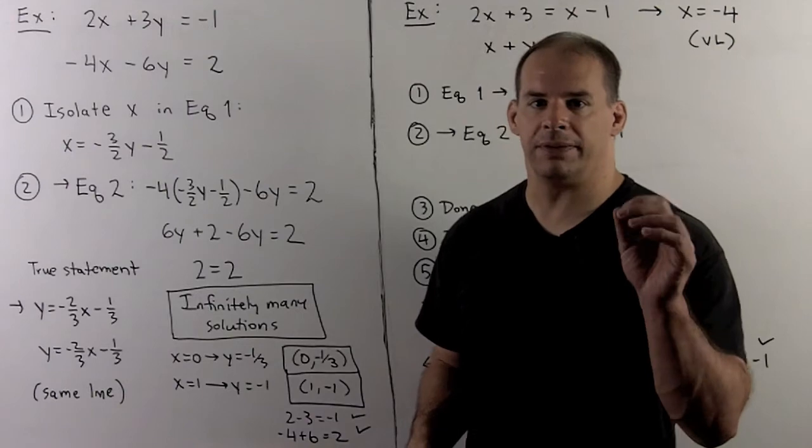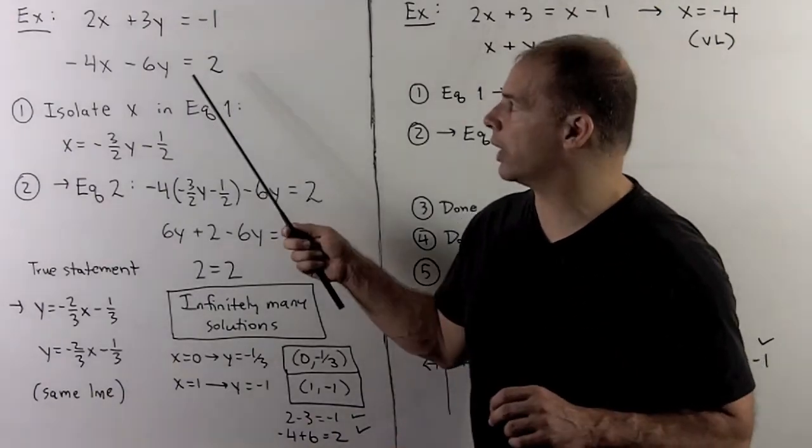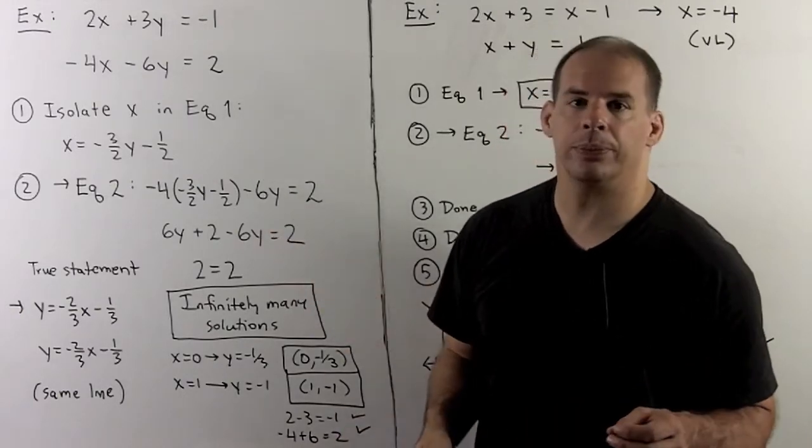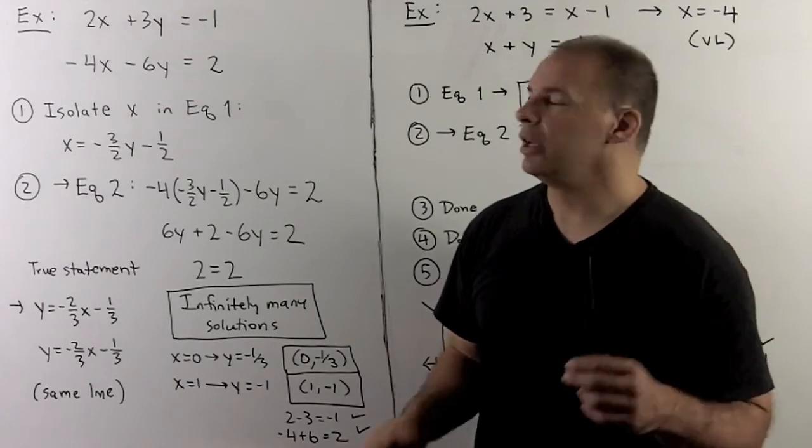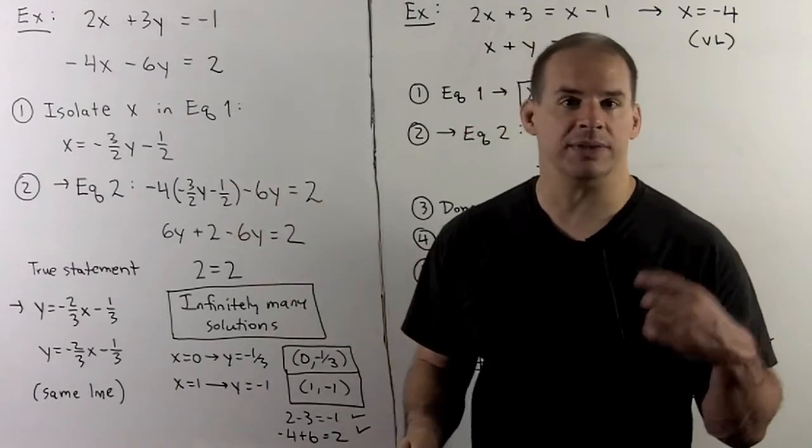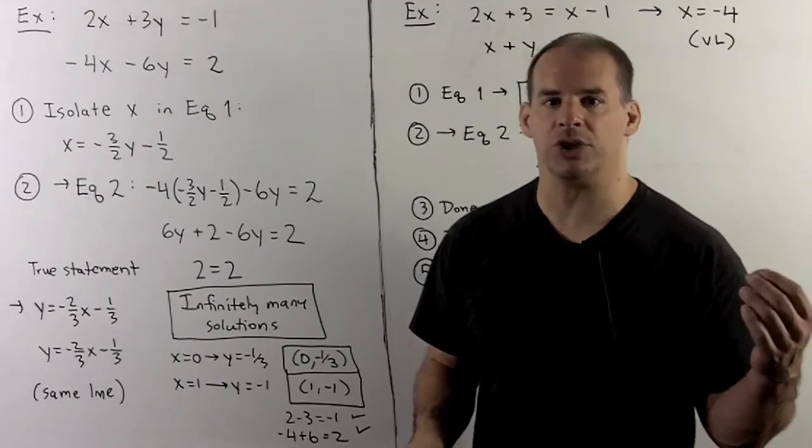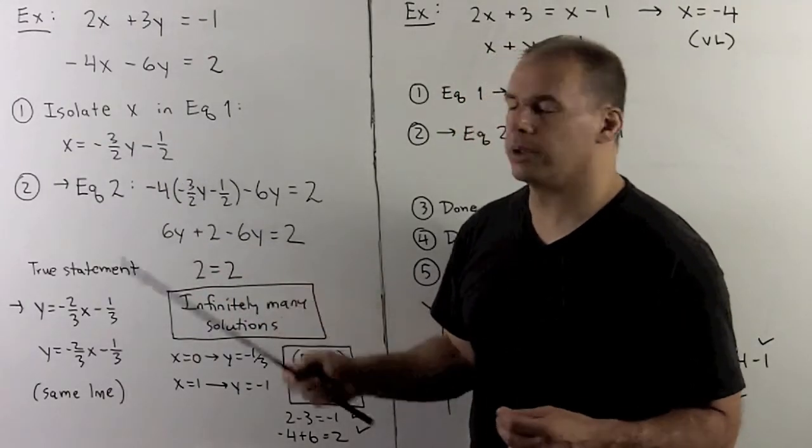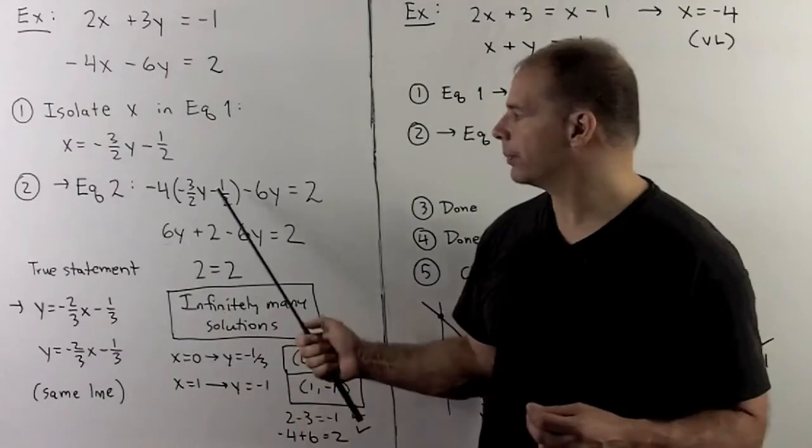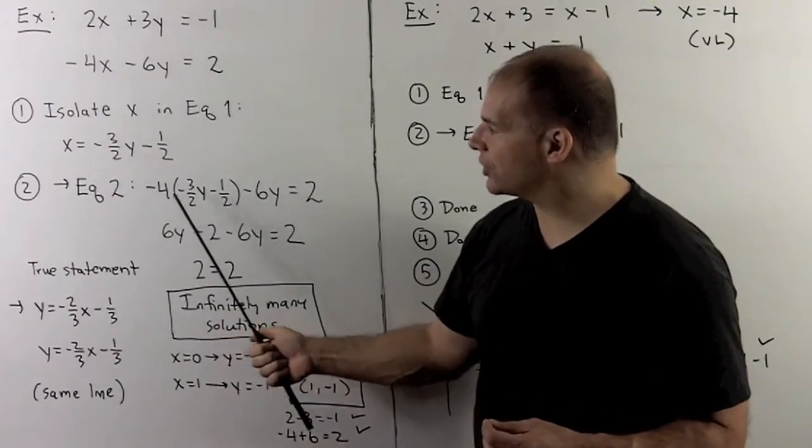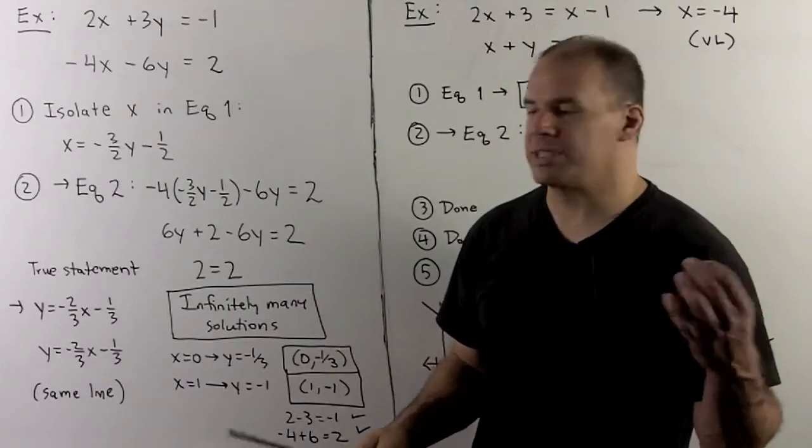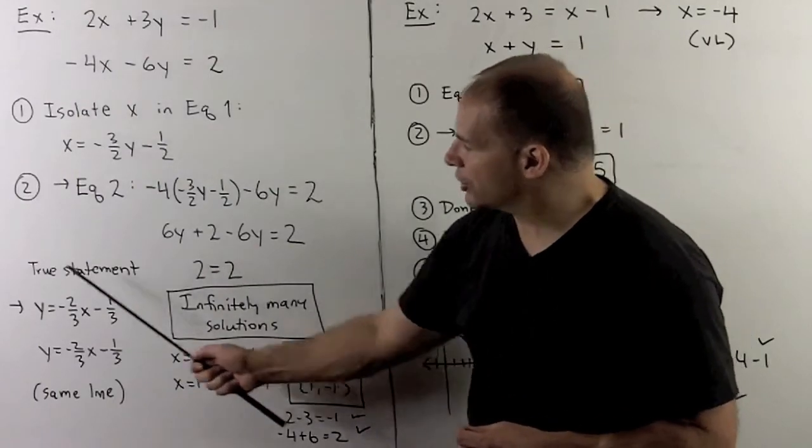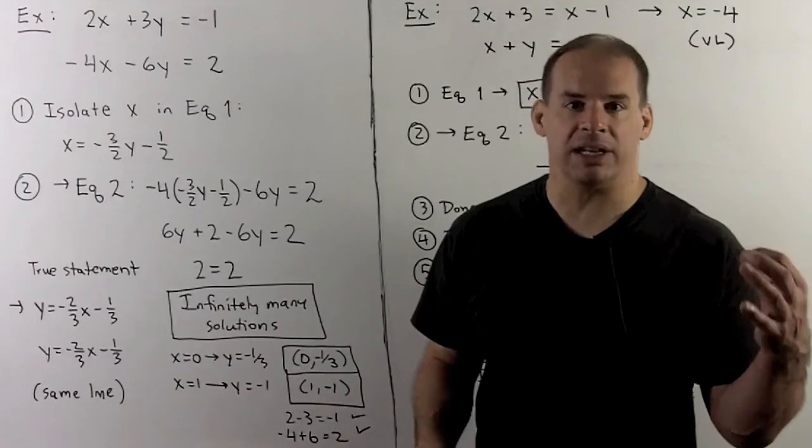For a third possibility, infinitely many solutions, let's consider the system of linear equations. 2x + 3y = -1, -4x - 6y = 2. We proceed as usual. We note, if I try to isolate x or y in either equation, we have to deal with fractions. I'll just isolate the x in equation 1. That gives x = -3/2 y - 1/2. We put in for x in equation 2. We get this expression here. This has no x in it, so I can solve for y. When we simplify, we note that the y's go away. I'm left with the statement 2 = 2. This is a true statement, and this will mean infinitely many solutions.